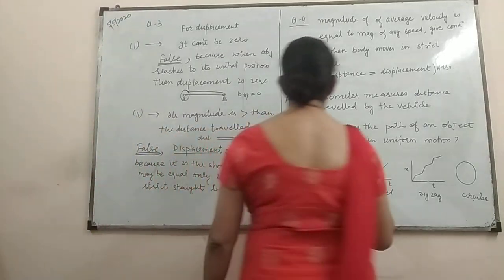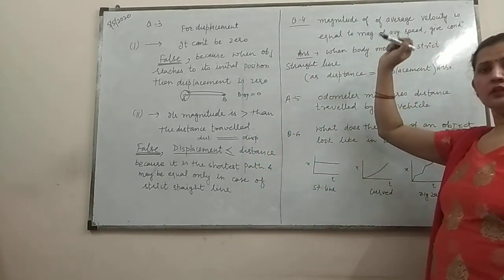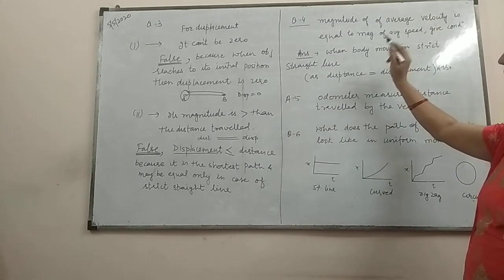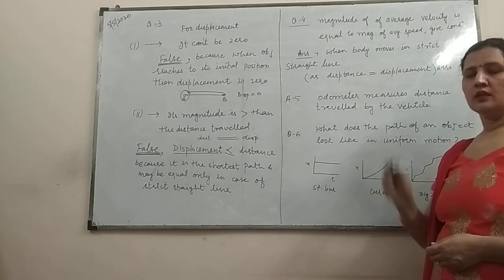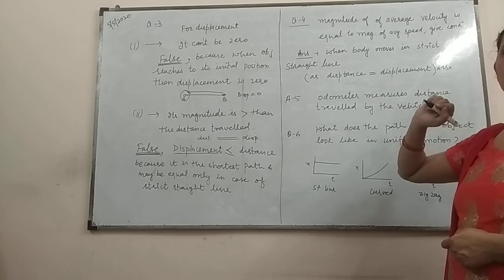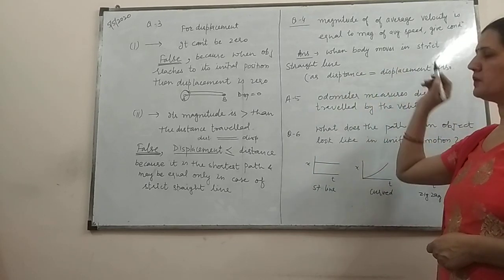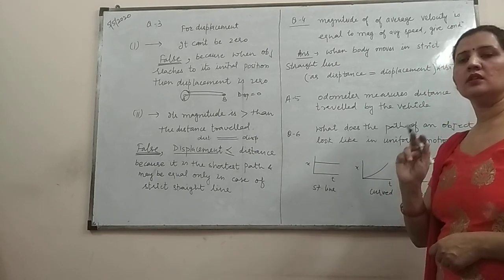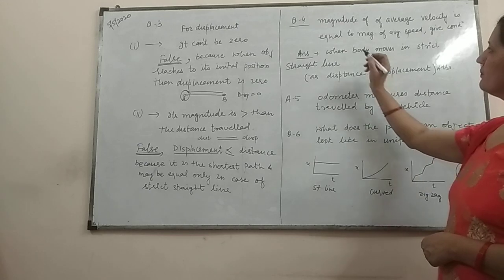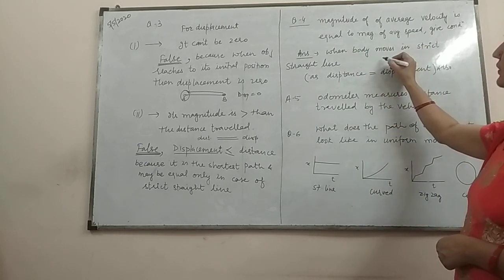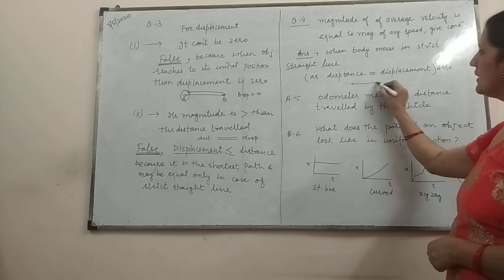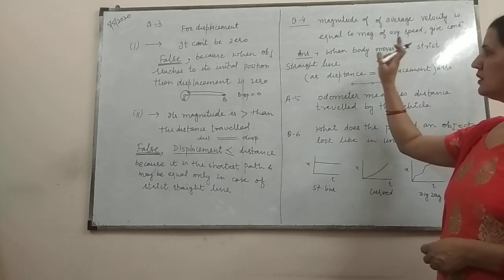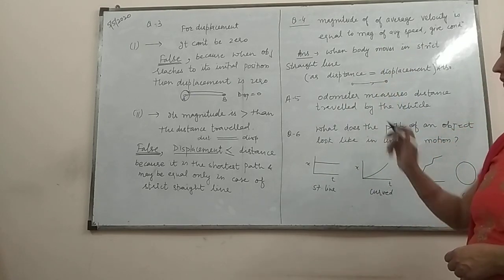The next question is, under what condition the magnitude of average velocity and average speed are equal? This situation is again the situation when the distance and displacement are equal. And distance and displacement are equal only in the situation when the particle or the object is moving in a single straight line in one direction only. In that situation, speed is equal to velocity.